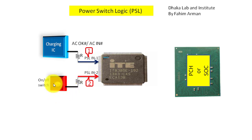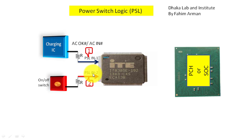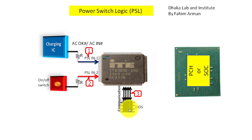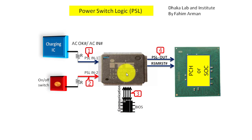On the other hand, there will be another signal that comes after pressing the on/off switch. This signal comes through a resistor, and after this resistor there will be 3.3 volts, so PSL_IN2 will be high. That enters into the IO chip, where there will be communication with BIOS. If the communication is successful, there will be a PSL_OUT signal and an RSMRST# signal — these signals will be low.